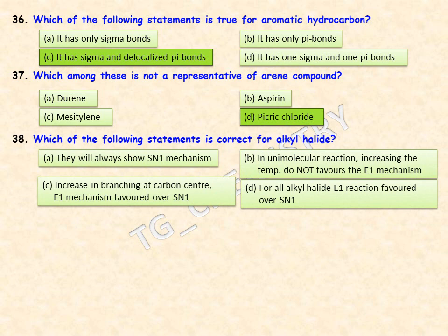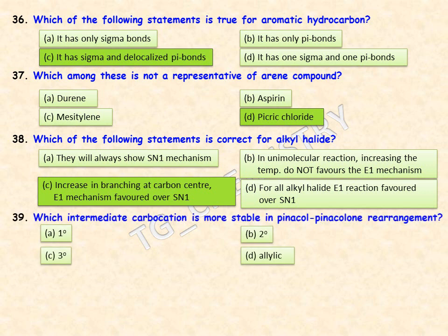Which of the following statements is correct for alkyl halides? Options include: they always show SN1 mechanism; increasing temperature does not favor E1; increasing branching at the carbon center favors E2 over SN1; or E2 is always favored over SN1 for all alkyl halides. Option C is the correct statement: with increasing branching at the carbon center, E2 mechanism is favored over SN1.